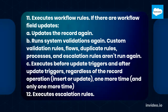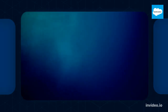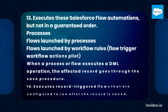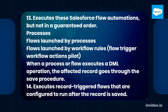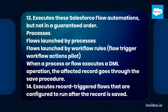Step 12: Executes escalation rules. Step 13: Executes these Salesforce flow automations, but not in a guaranteed order: processes, flows launched by processes, flows launched by workflow rules, and flow trigger workflow actions (pilot). When a process or flow executes a DML operation, the affected record goes through the save procedure. Step 14: Executes record-triggered flows that are configured to run after the record is saved.